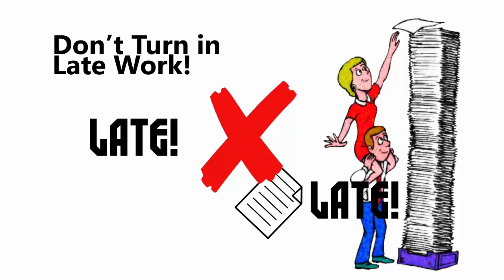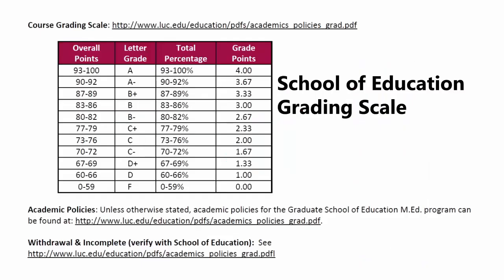If you have unforeseen personal circumstances which will impact your work, please talk with me about your concerns for completing the course obligations. Here is the table depicting the grading schedule that the School of Education uses. I have listed the link to the table here along with links to the School of Education's academic policies and course withdrawal and incomplete policy and procedure. If you find yourself needing to consider withdrawing or not completing the course, please contact your advisor in the school as early as possible.